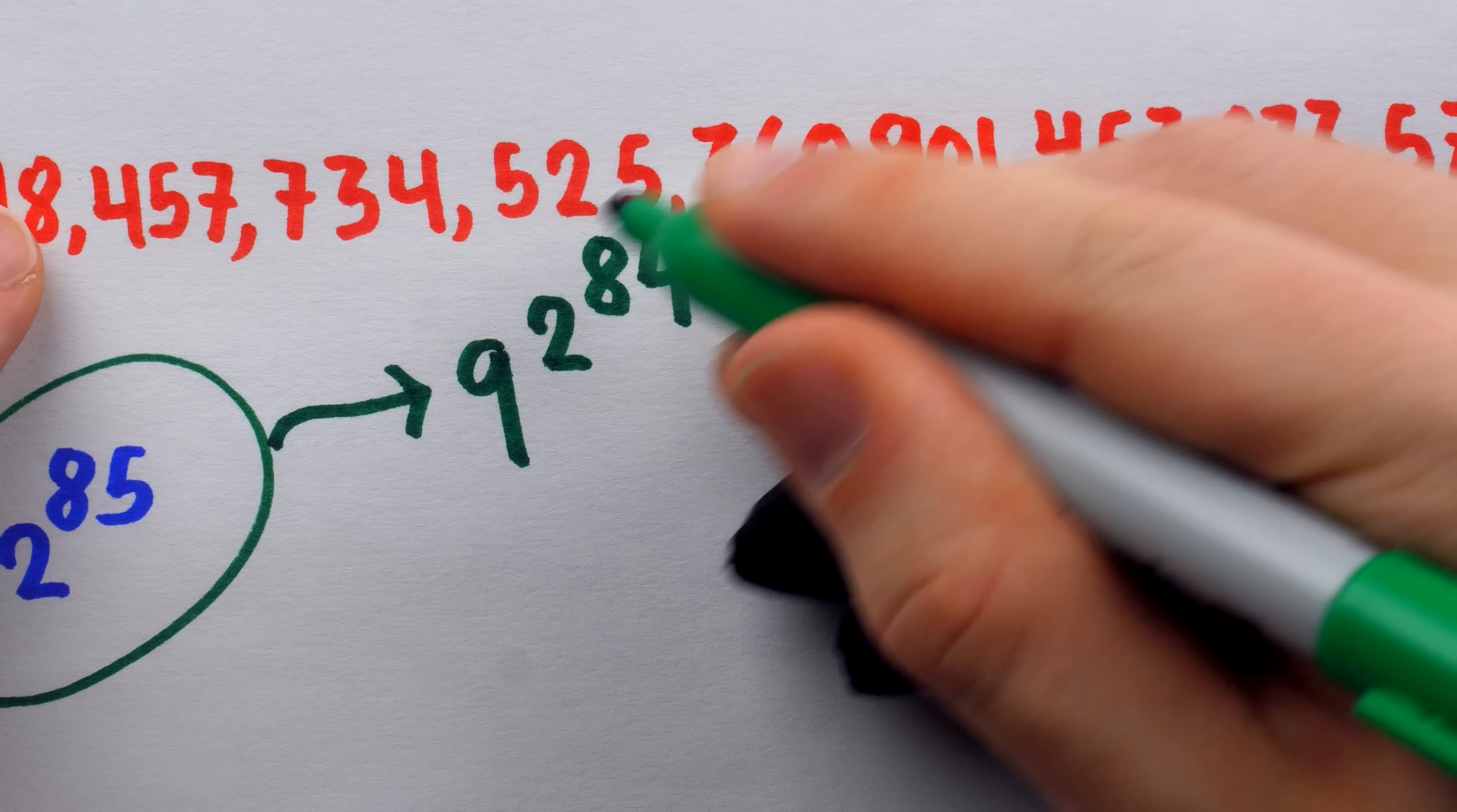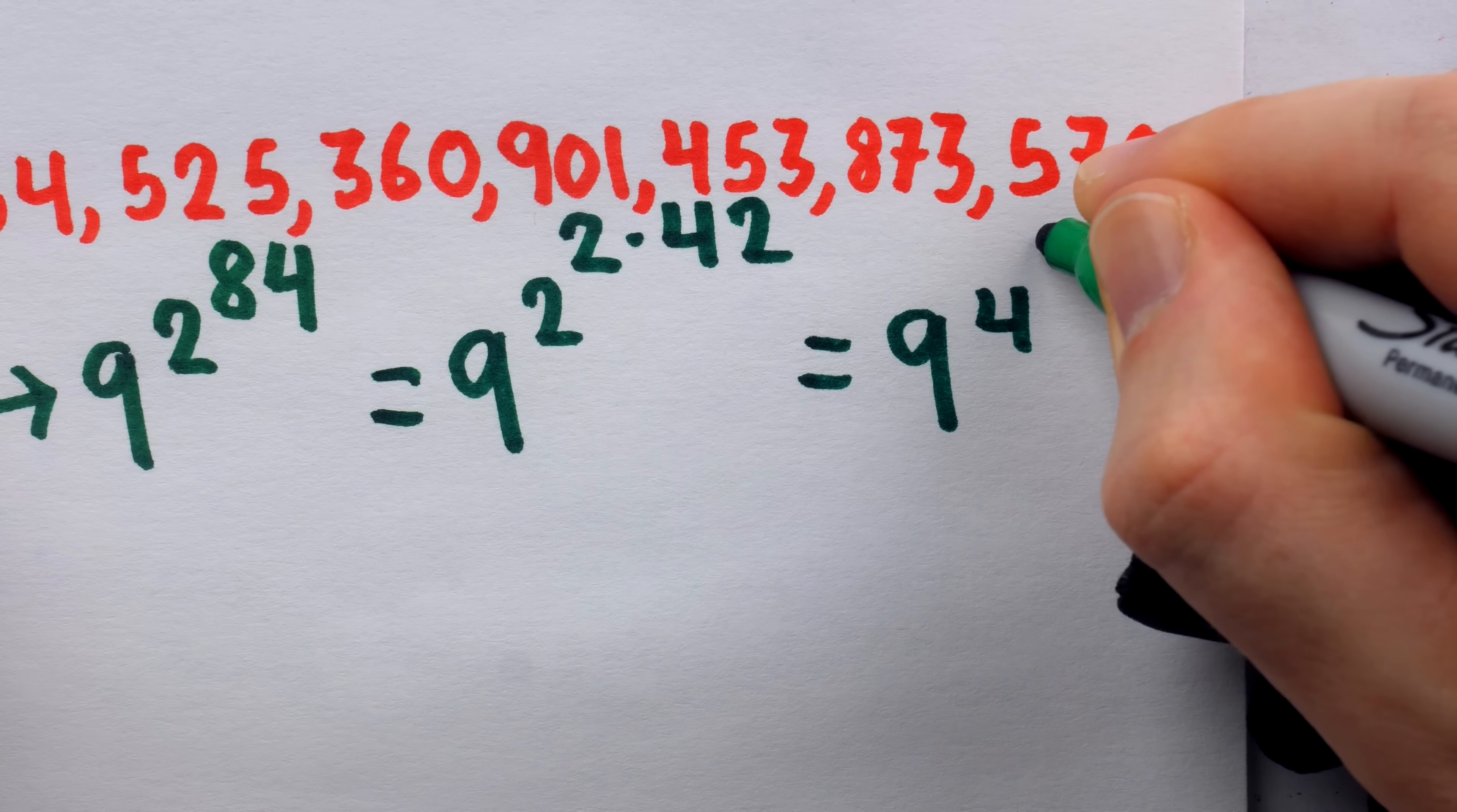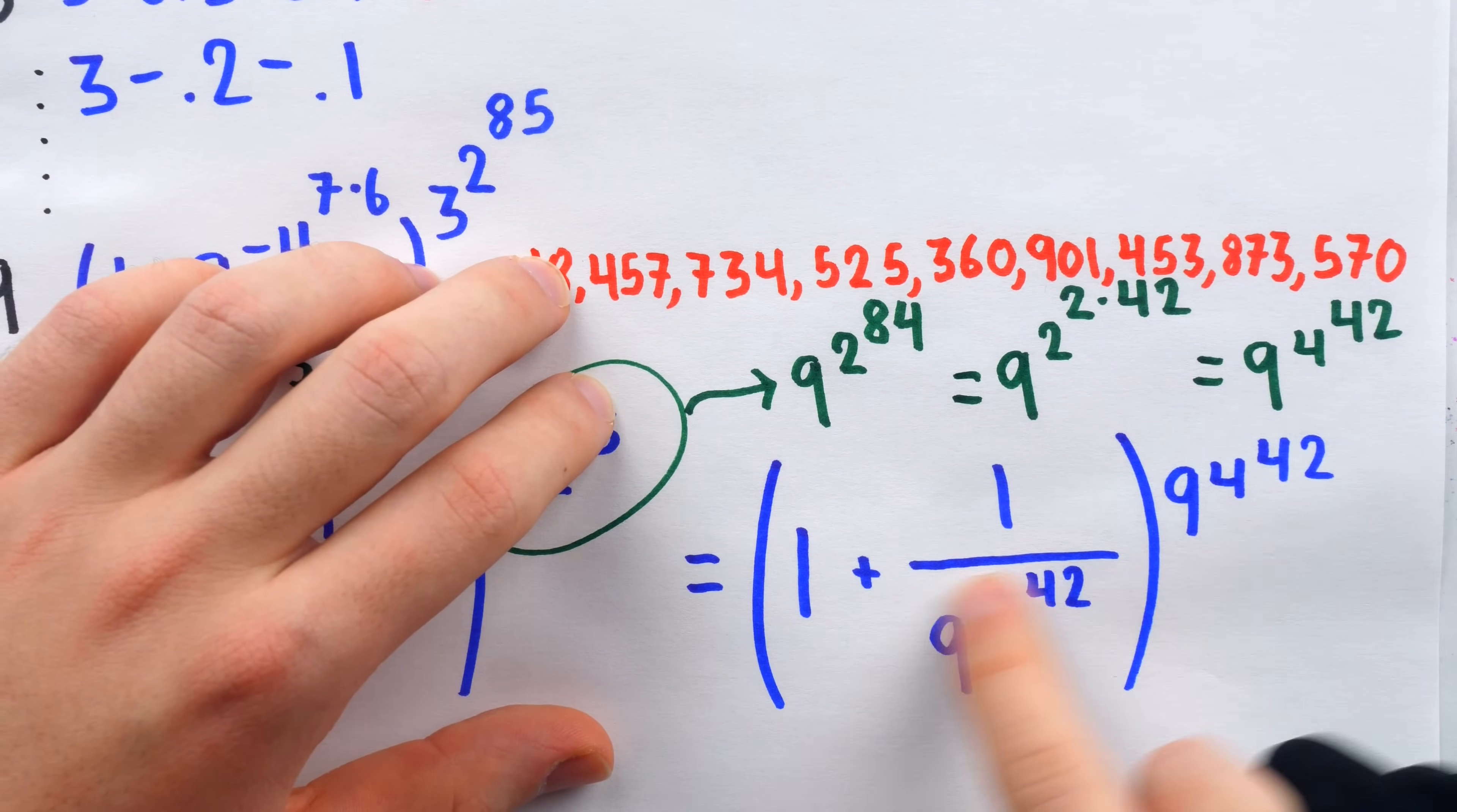Now we have common bases of 9, and we're almost there. 84 is the same as 2 times 42. Now if we rewrite it like that, we see that we could raise 2 to the power of 2 to make this 4 to the power of 42, and thus this exponent would be rewritten as 9 to the power of 2 squared is 4, and we still have that 42 in the exponent. And there we go, it's a perfect match. Finishing the rewriting then, we've shown that Richard Sabey's approximation for e is this, 1 plus 1 over 9 to the power of 4 to the power of 42 to the power of 9 to the power of 4 to the power of 42.